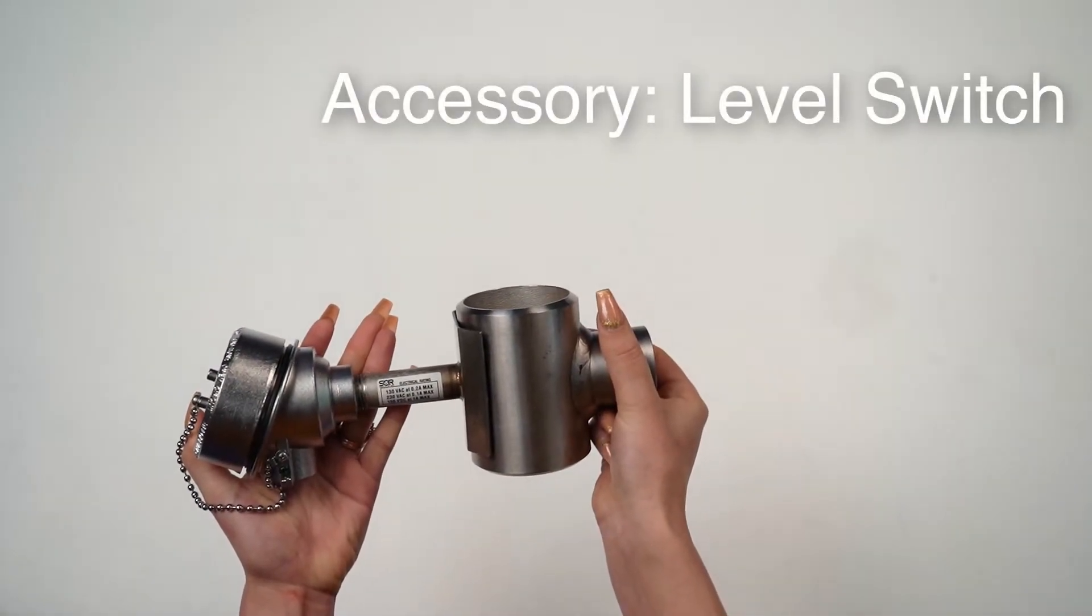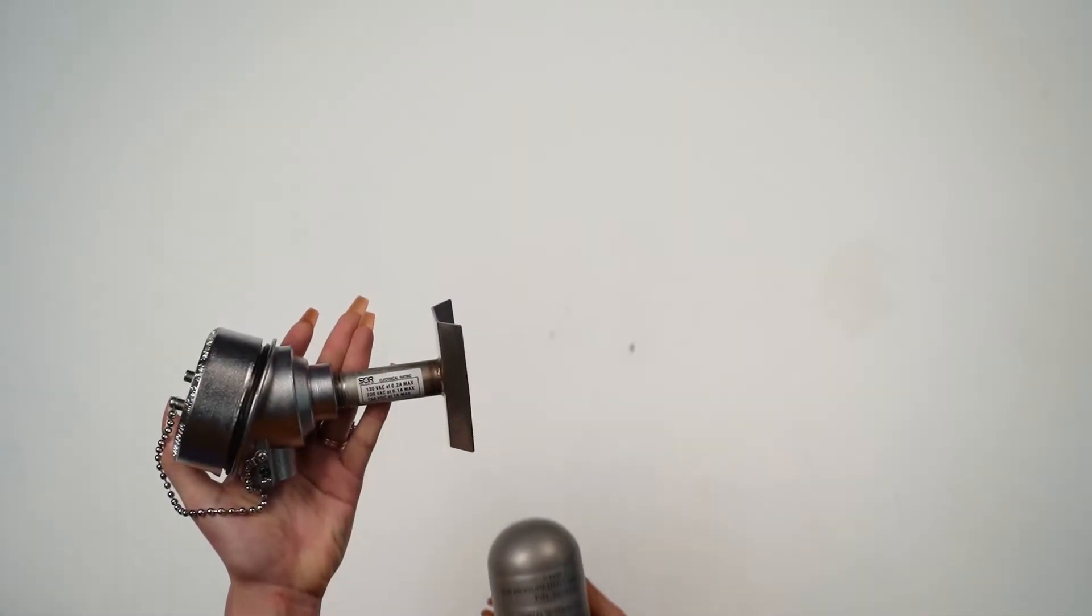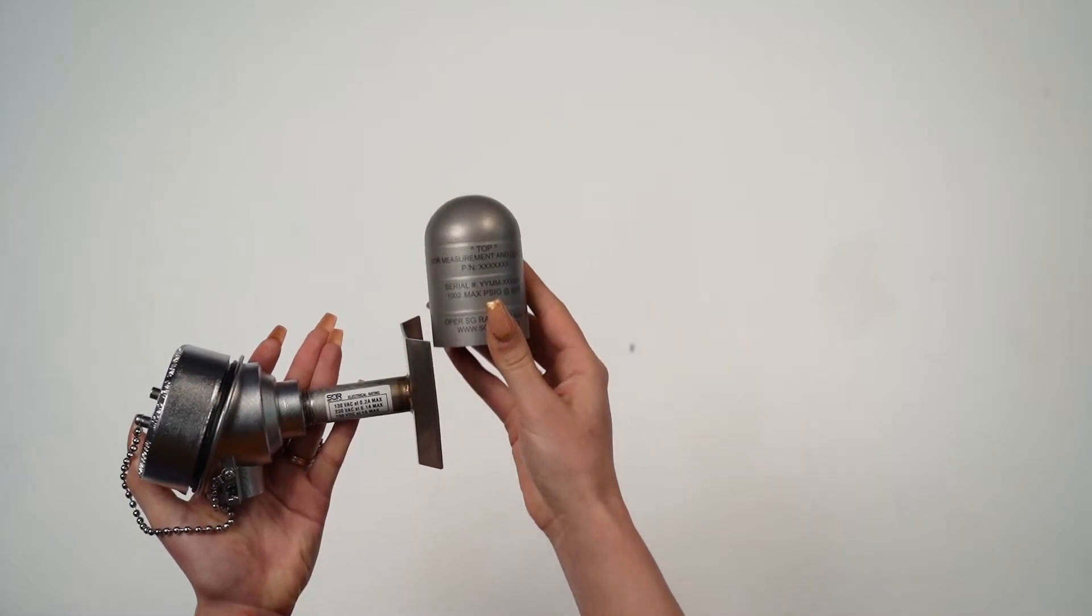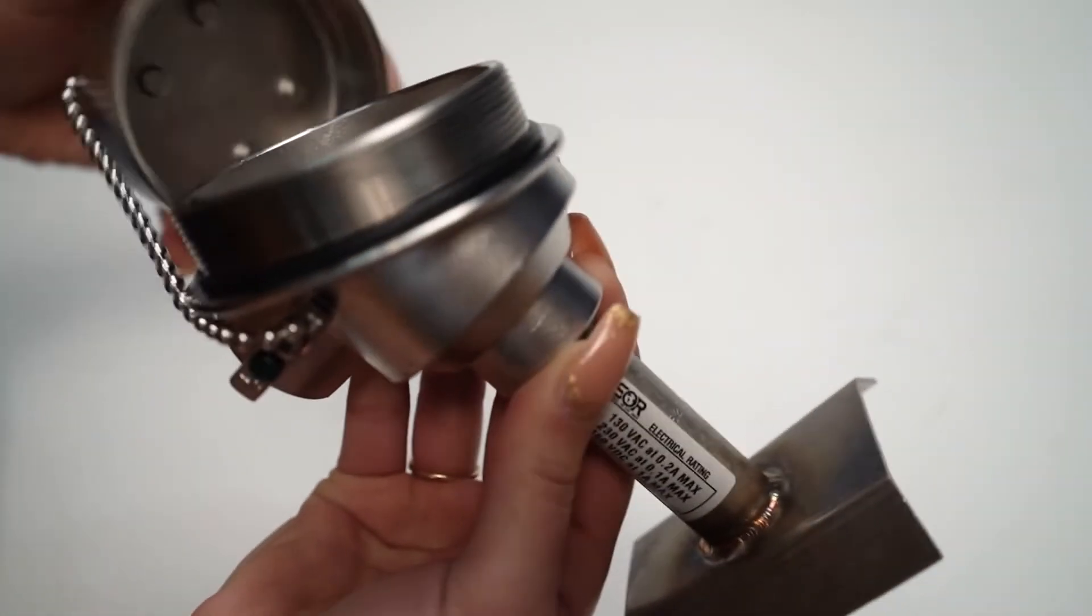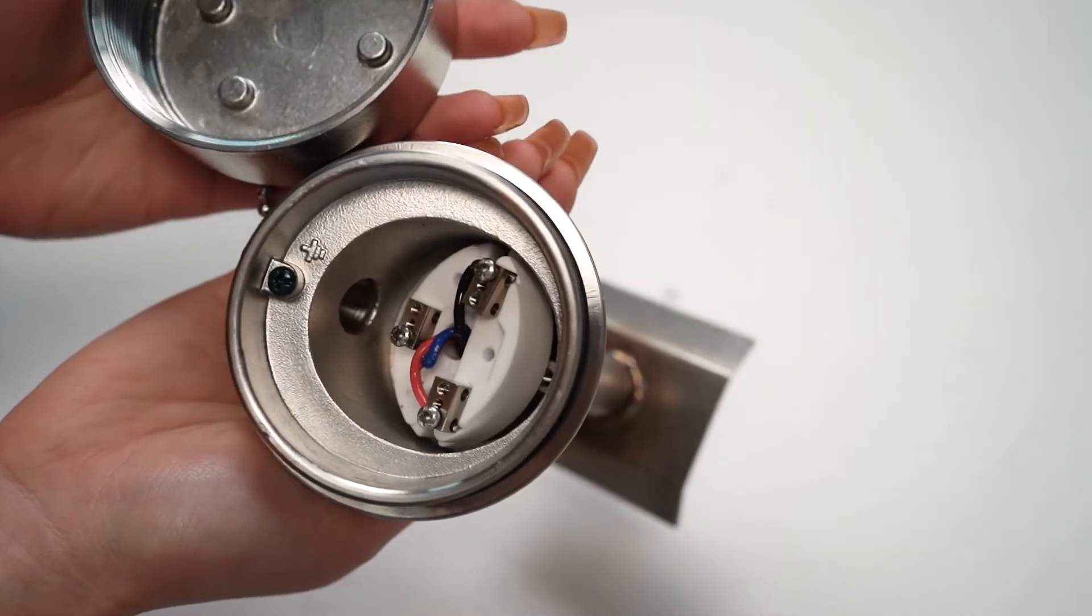An accessory level switch can be used as a high or low level alarm for a control system and is available with explosion proof housing and a one amp read switch. You can connect multiple switches to one MLI.